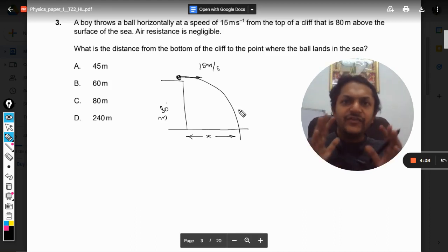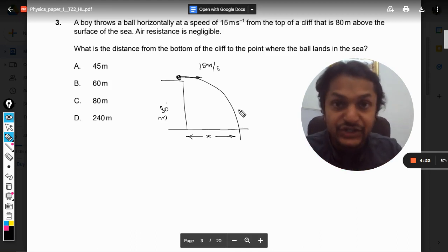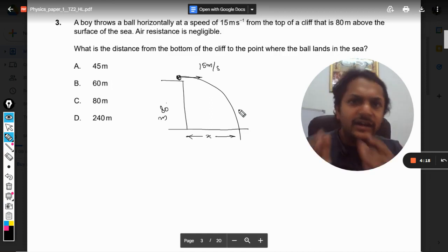It is accelerated on the vertical axis, but on the horizontal axis it moves with constant speed. So to find x, what we want to do is multiply speed with the total time that the ball will take to fall from this point to the bottom of the cliff.